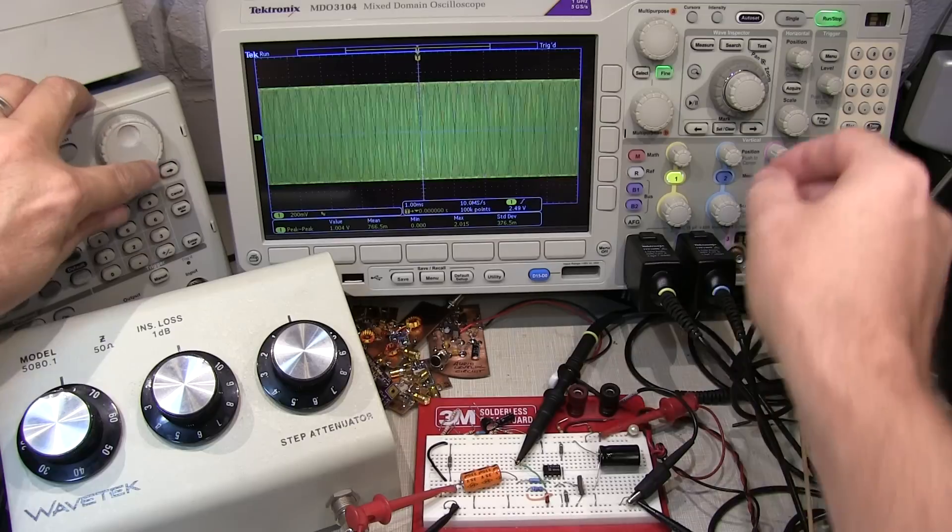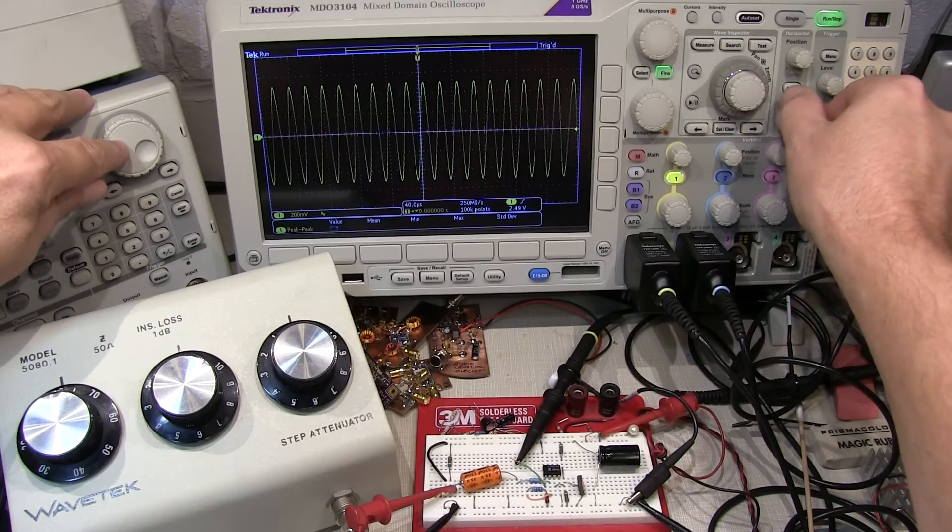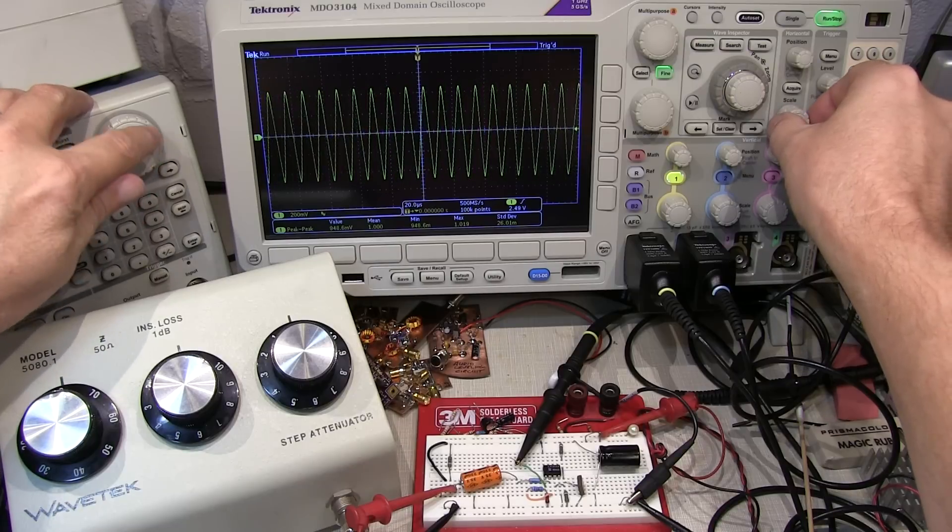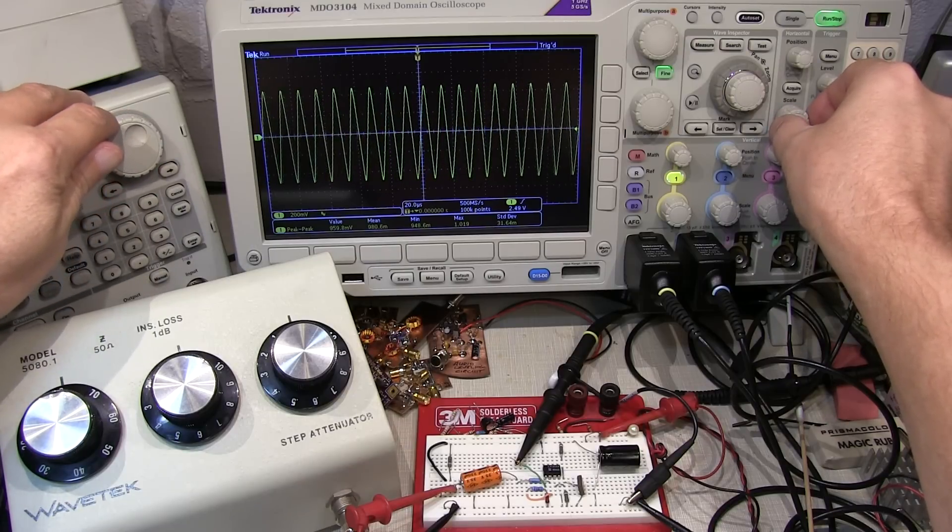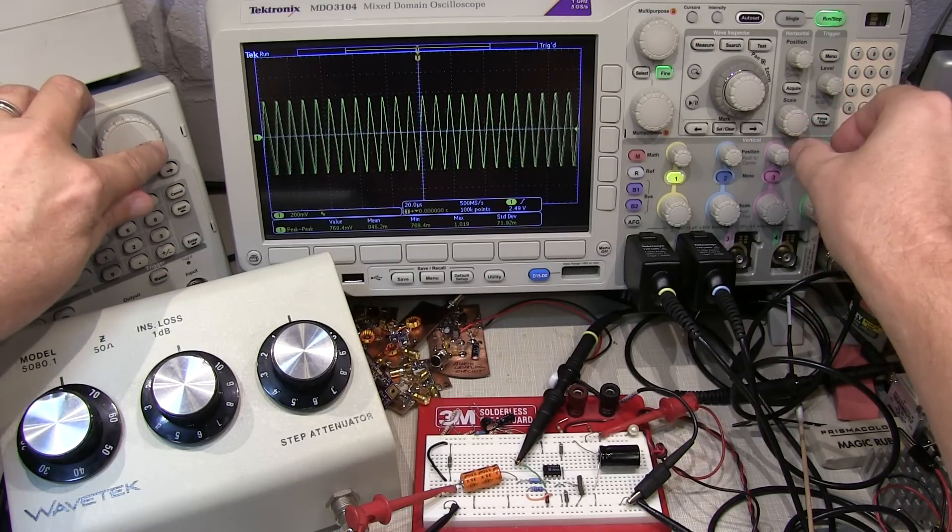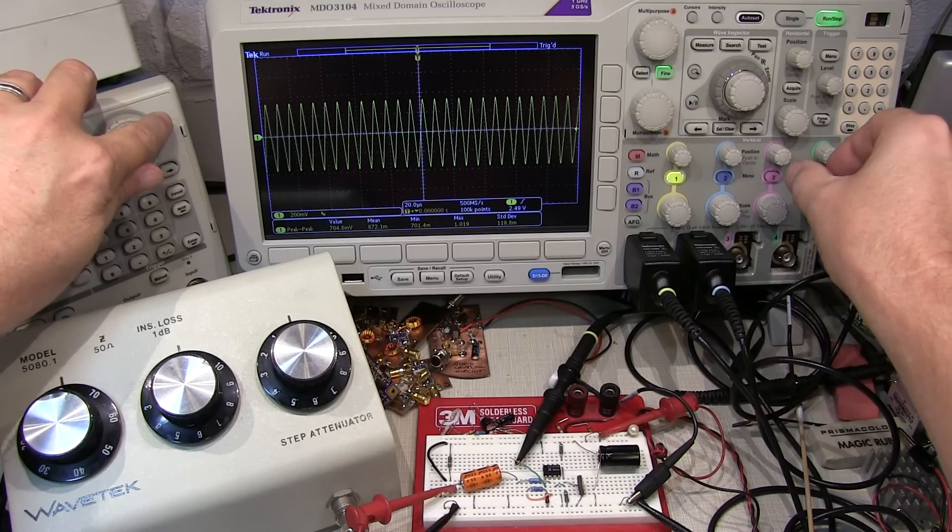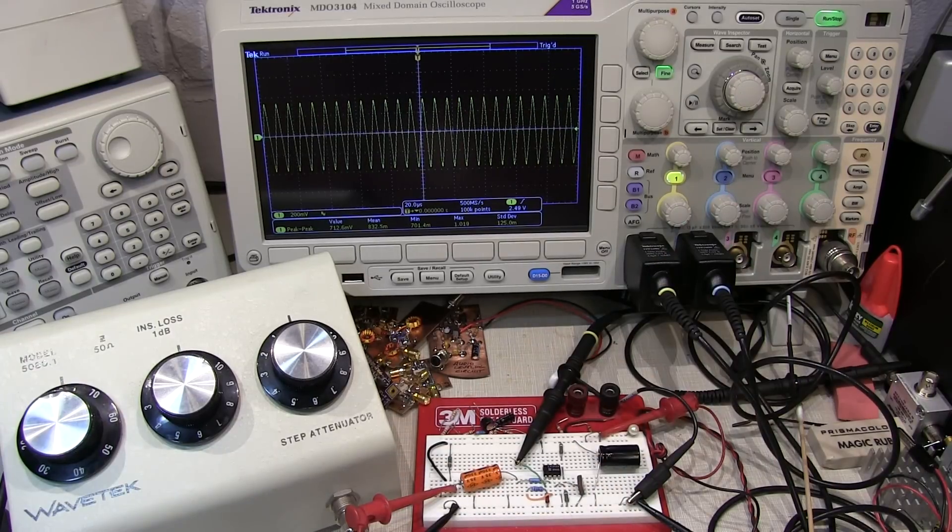Let's start increasing the frequency here. As we keep increasing this up, I'm going to speed the scope up again. So we're up at nearly 100 kilohertz here. We're starting to drop. But we can see that we're dropping now to 700 millivolts here. But I'm only at a frequency of about 130 kilohertz. So what's going on?